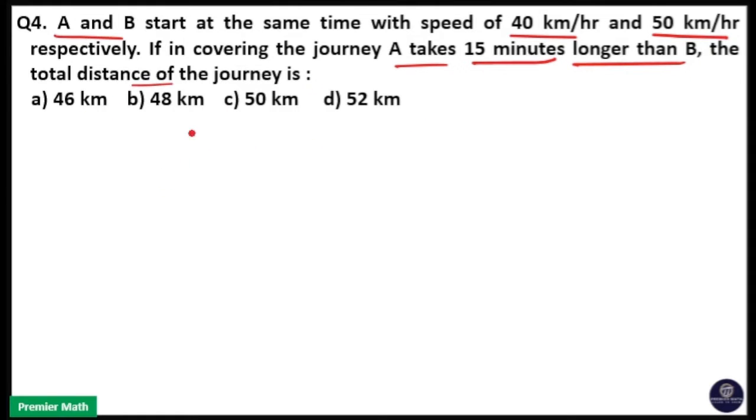Same thing here. They are covering the same distance, so distance is constant. That means speed ratio is equal to 40 by 50, that is 4 by 5. Then time ratio will be the reverse of this, that is 5 by 4.